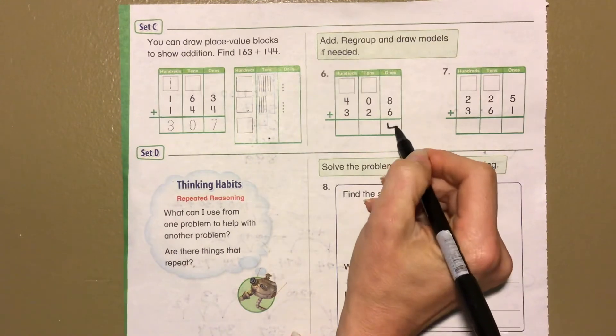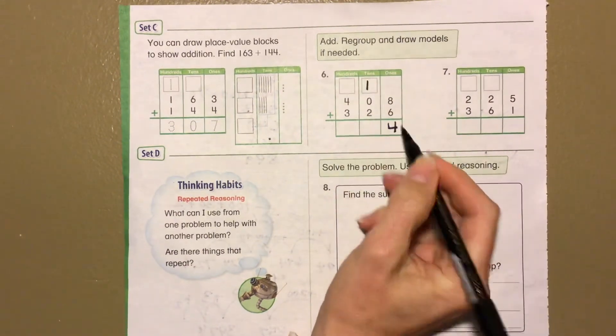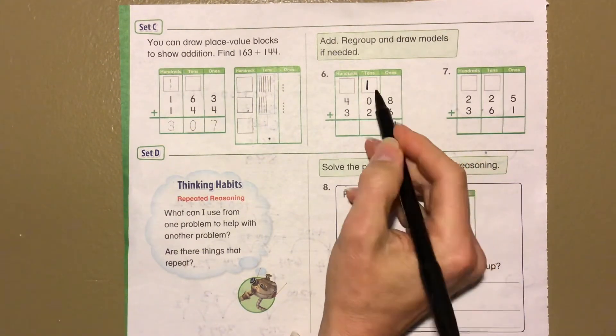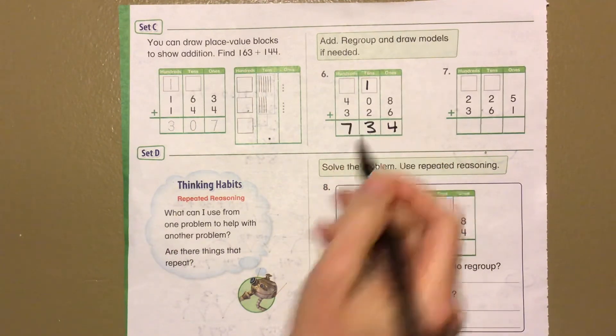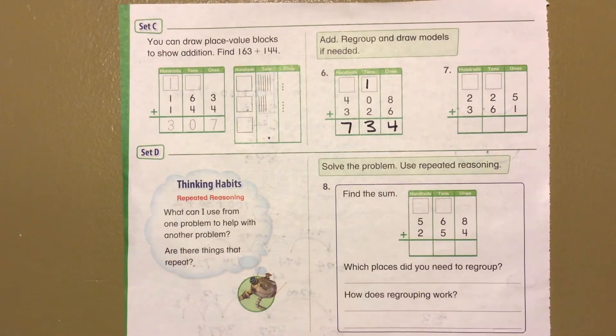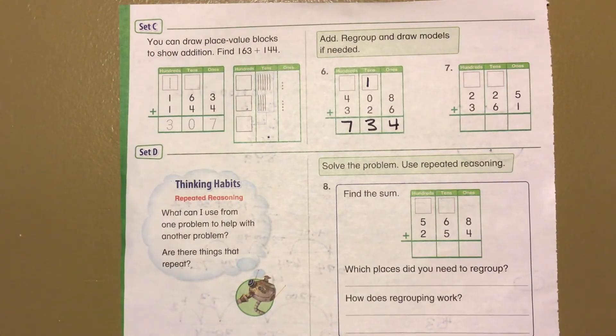8 plus 6 is 14, 4 and regroup that 1. 0 plus 2 is 2 plus 1 more is 3, and 4 plus 3 is 7. We get 734 for our answer right there.